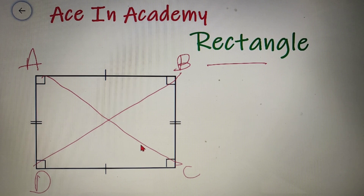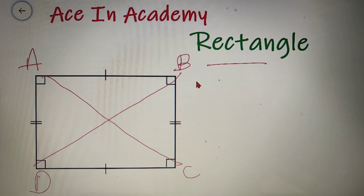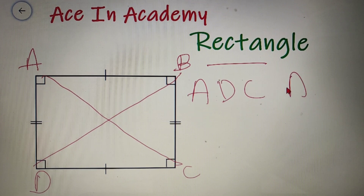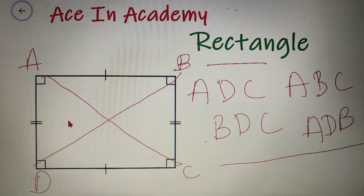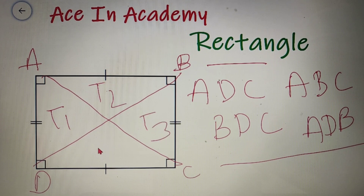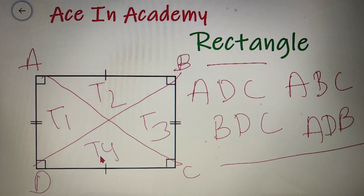The fifth property is that the bigger triangles formed by the diagonals of the rectangle are congruent to each other, but the smaller triangles are not congruent to each other. Triangles ADC and ABC are congruent to each other, and triangles BDC and ADB are congruent to each other. But the smaller triangles T1, T2, T3, and T4 are not congruent — T1 is not congruent to T2, T2 is not congruent to T3, and T3 is not congruent to T4.